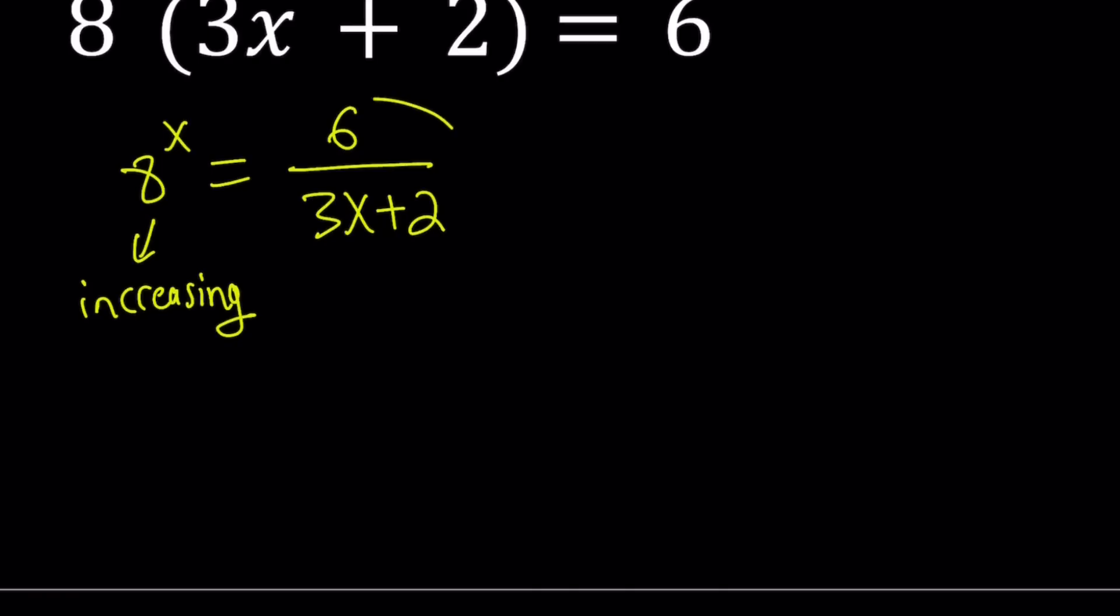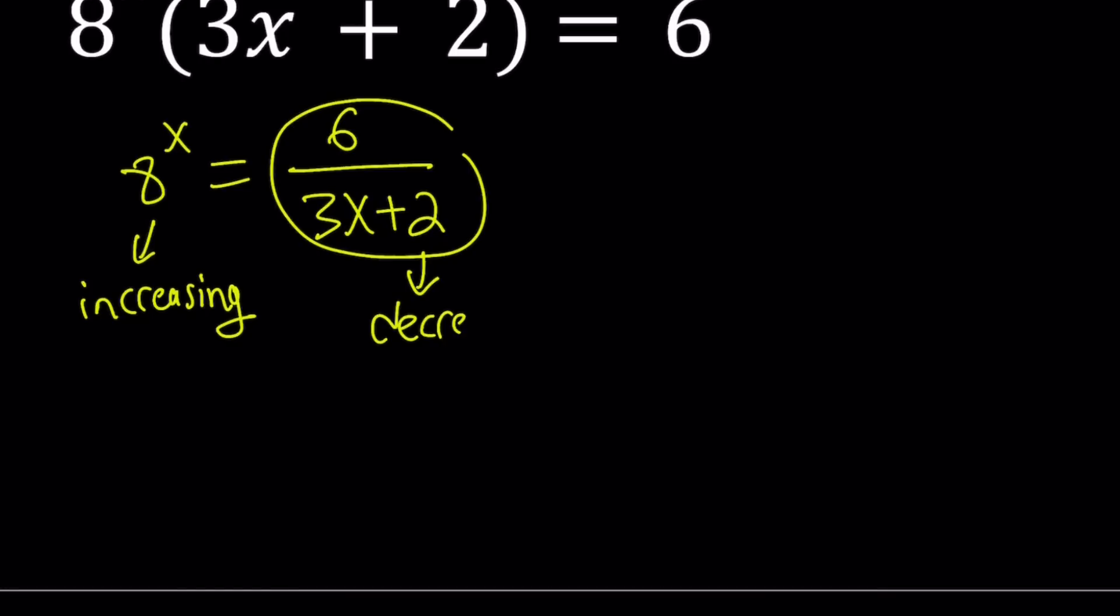The other side is a rational function, and guess what? As x increases, as x approaches infinity, this approaches 0. We're going to take a look at the limit as well. But this is a decreasing function because the denominator increases. That is a line with a positive slope. As the denominator increases, the whole function decreases.